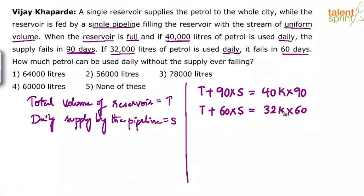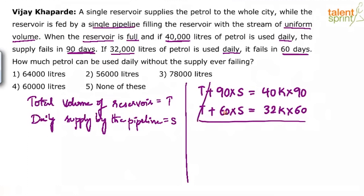The two equations are: T + 90S = 40,000 × 90, and T + 60S = 32,000 × 60. Now solve these two equations for S. Subtracting, T cancels out, giving 90S − 60S = 30S = (40,000 × 90) − (32,000 × 60).